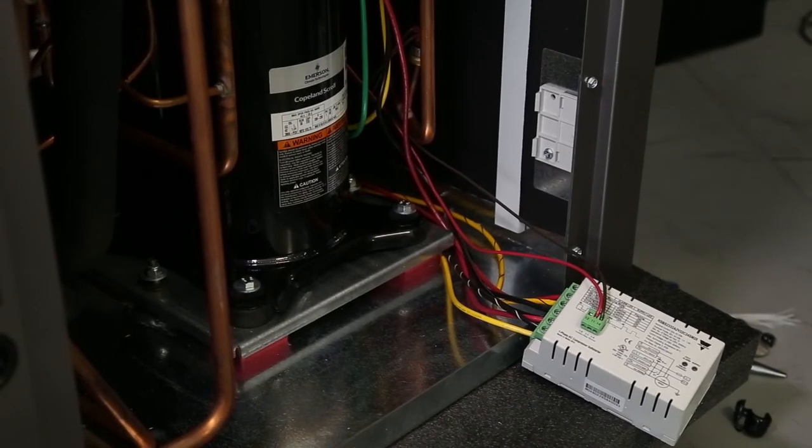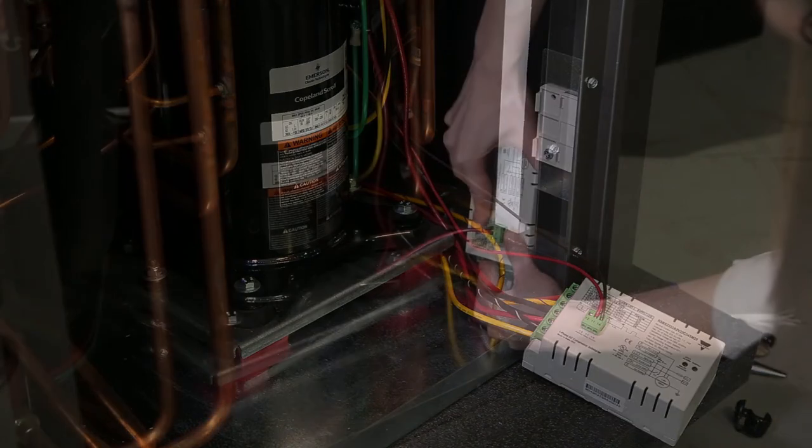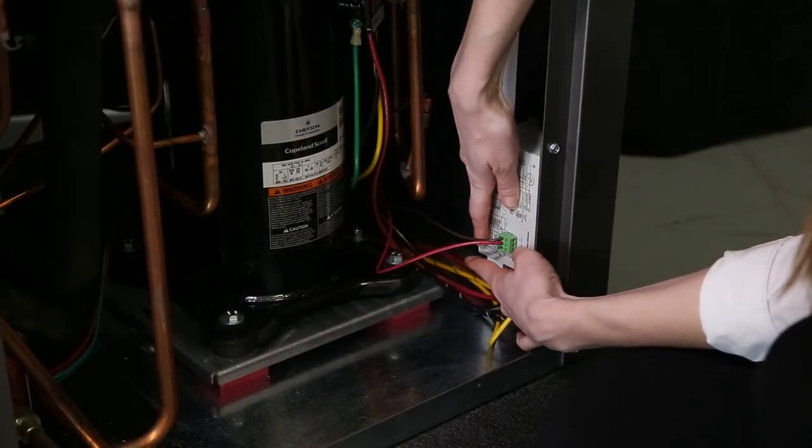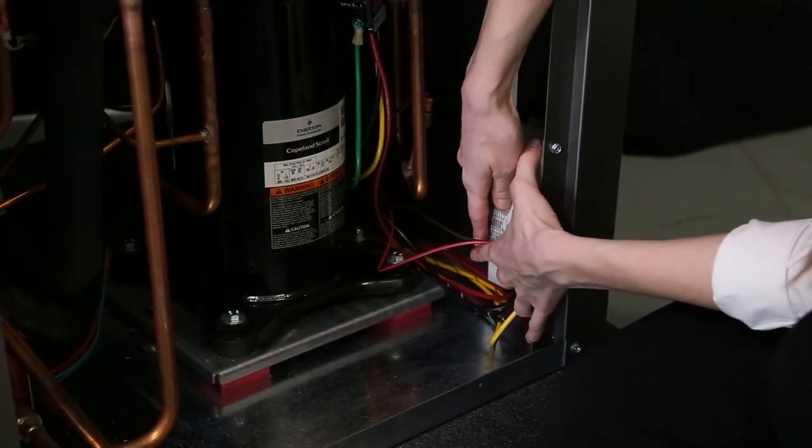After connecting all the wiring to the soft start module, mount the module to the plastic mounting clip on the sheet metal bracket, making sure the wiring is pointed downward.